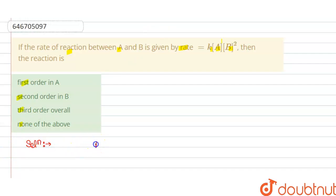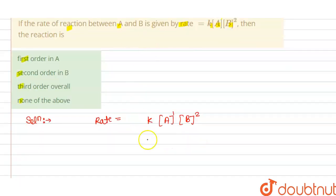So the solution of this question is, we have the rate is equals to rate constant K, concentration of A and B square. So here the order of reaction with respect to the given substance is defined as the index or the exponent of the concentration.